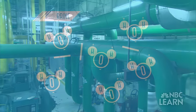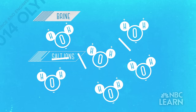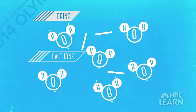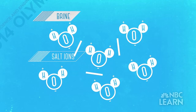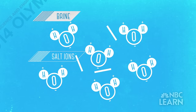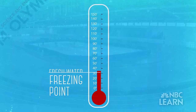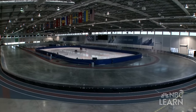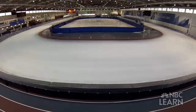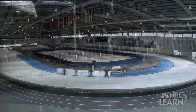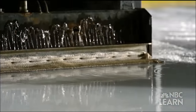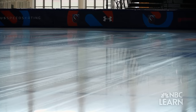Why brine? Salt ions keep water molecules apart so they don't form hydrogen bonds as easily to become ice. That means salt water freezes at a lower temperature than fresh water. The brine solution chills the slab so the layers of filtered fresh water put over it will freeze solid — creating a clean surface that has a really good strong bond but also has a fast surface.